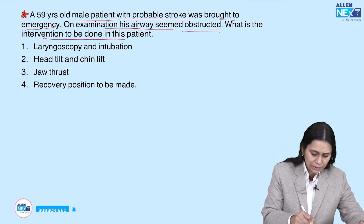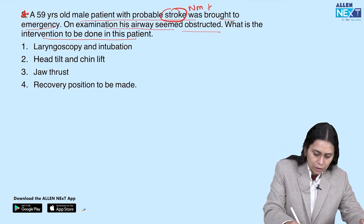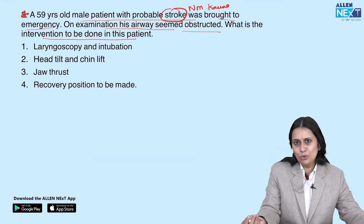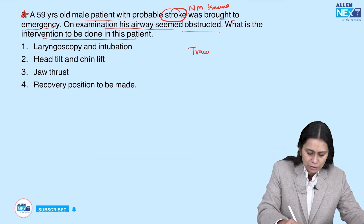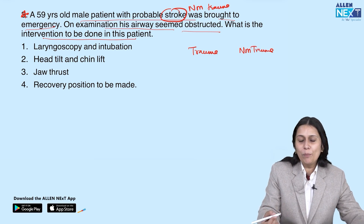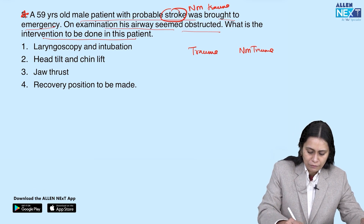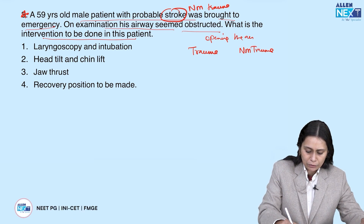What is the intervention to be done in this patient? It's a stroke patient, meaning non-trauma. We simply divide patients who come into the ICU or emergency into two divisions: trauma patient and non-trauma patient, when we plan for opening the obstructed airway.